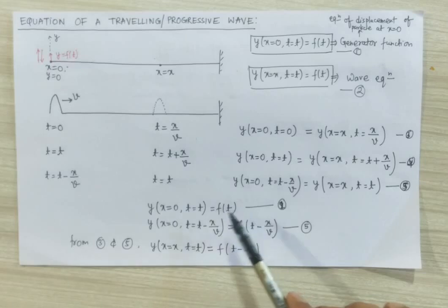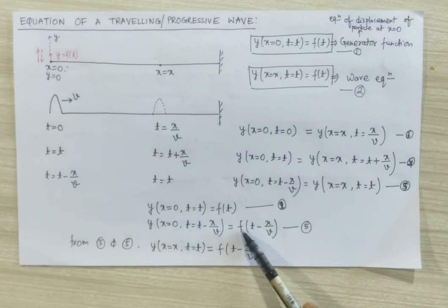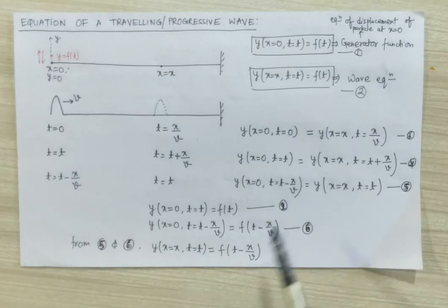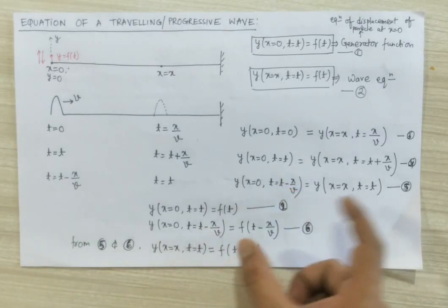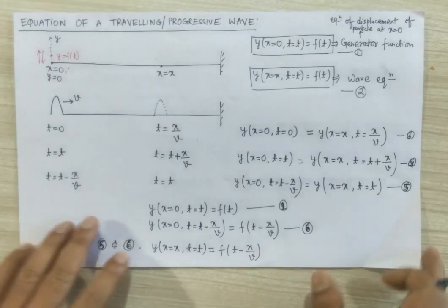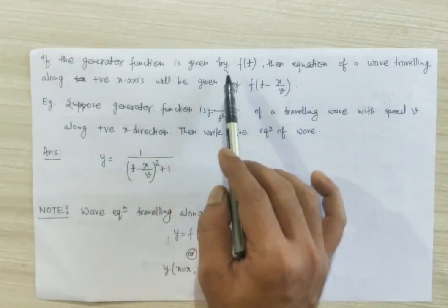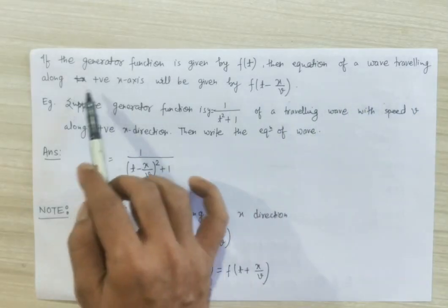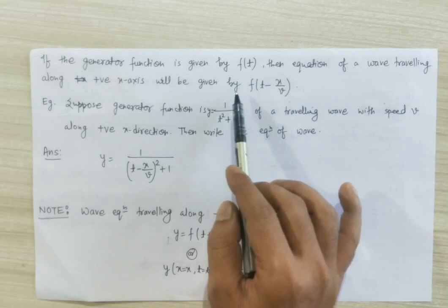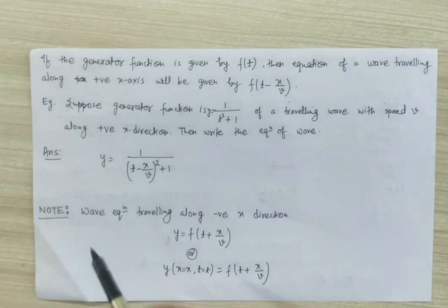Since the generator function is a function of time t, if we substitute t minus x by v in place of t, the generator function becomes a function of t minus x by v. From equations 5 and 6, the left-hand sides are the same, so the right-hand sides must also be the same. Therefore, y at x equal to x and t equal to t is a function of t minus x by v. So if the generator function is y equal to f(t), then the equation of a wave travelling along the positive x direction is y equal to f(t minus x by v).